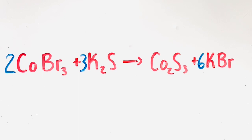Finally, there are three sulfur atoms on the product side, but since we already added a three in front of K2S, there are three sulfur atoms on both sides. To double check your work, go through each atom and see if they are balanced on both sides. There are two cobalt atoms, six bromine atoms, six potassium atoms, and three sulfur atoms on both the reactant side and the product side.